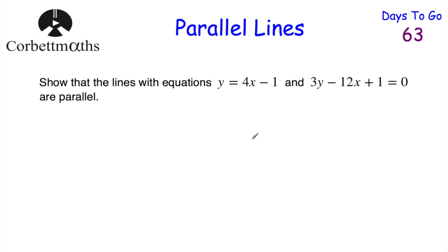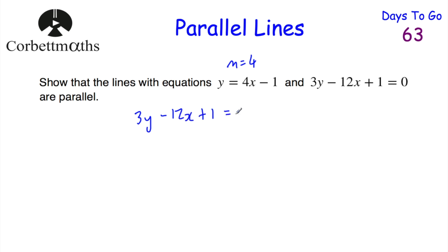For the last question, we've been asked to show that the lines y equals 4x minus 1 and 3y minus 12x plus 1 equals 0 are parallel. The gradient of y equals 4x minus 1 is 4. The second equation is not in the form y equals mx plus c, so we need to rearrange it.